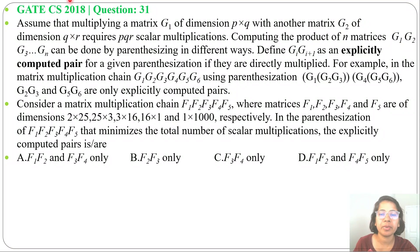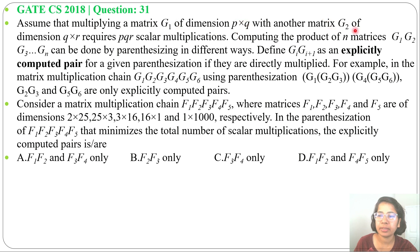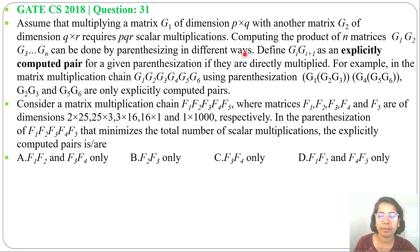Let's solve a previous question on dynamic programming. This question was asked in GATE CH 2018, question number 31. Assume that multiplying a matrix G1 of dimension P×Q with another matrix G2 of dimension Q×R requires P·Q·R scalar multiplications. Computing the product of N matrices G1, G2 up to GN can be done by parenthesizing in different ways. Define (Gi, Gi+1) as an explicitly computed pair for a given parenthesization if they are directly multiplied.